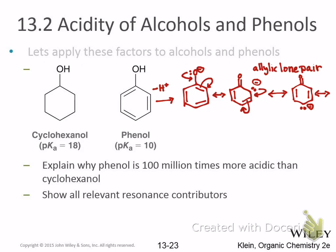The resonance hybrid would have dashed lines where the double bond moves to, and a dashed bond between the oxygen and the ring. You show partial negative charges on the oxygen, and on the ortho and para carbons — positions 2 and 4. Those ortho and para positions are where you normally see the electron densities. This tells you where reactions are more likely to take place.